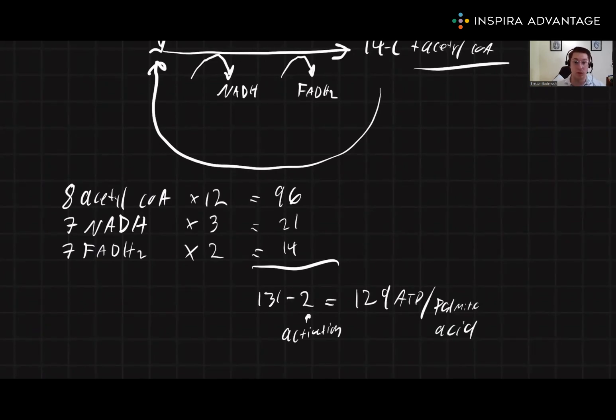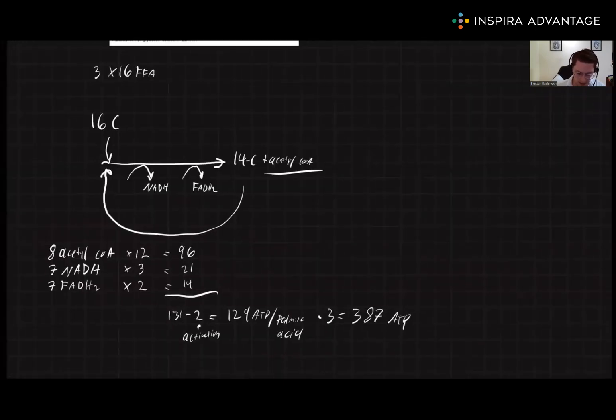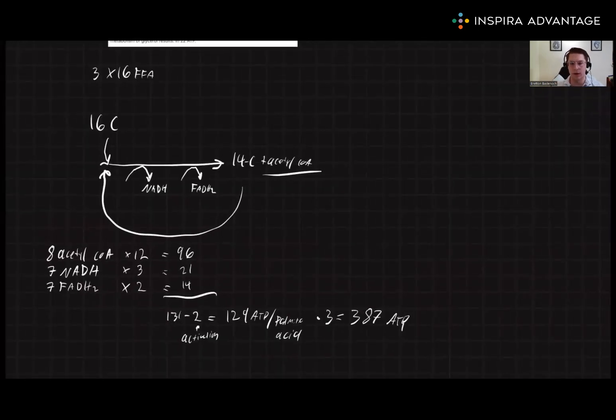So now we need to multiply this by three, because we know we're working with three palmitic acids. So multiply this number by three, and we're going to get 387 net ATP. Now, this would be easy to stop here and say, okay, 387 ATP.